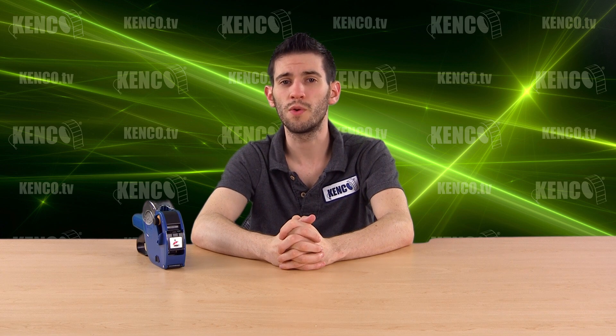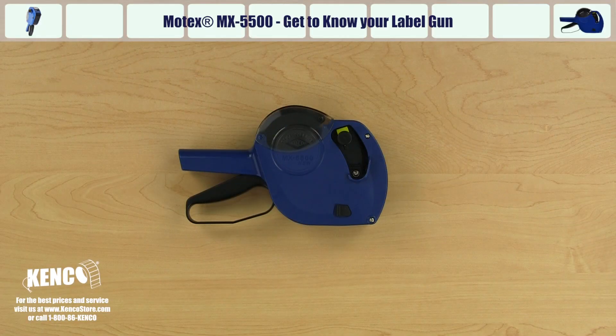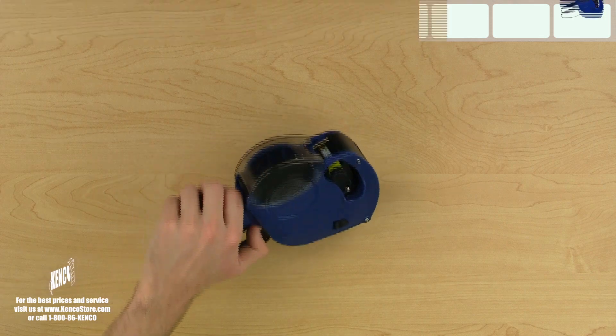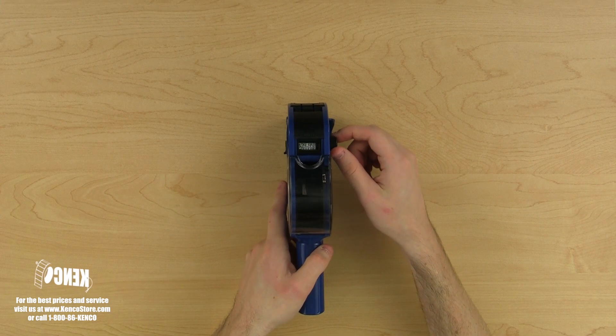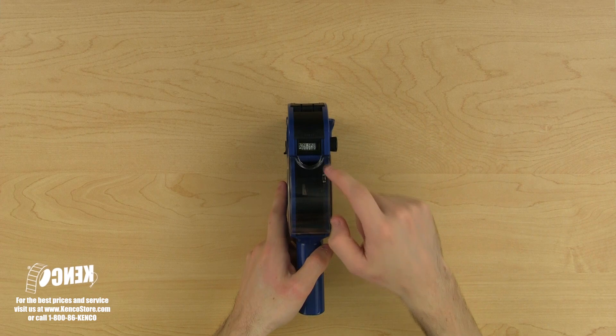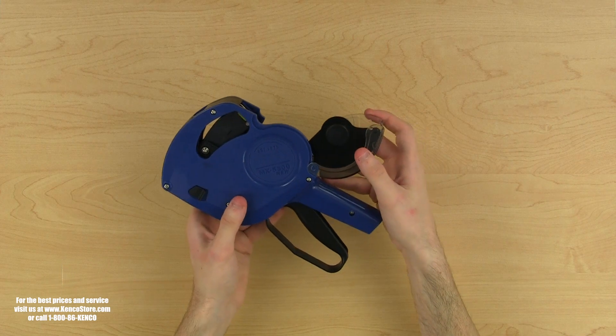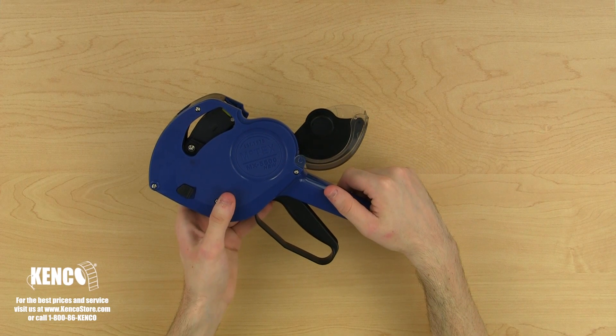Before we begin, let's familiarize ourselves with several key components of the gun. Pick up the gun with your left hand and take a look at the top. Right away, you'll notice the print head and the adjustment dial. Below, you will see the upper housing assembly. Pull on the horseshoe depression at the top of the upper housing assembly to open it. Here, we will see the label housing assembly.